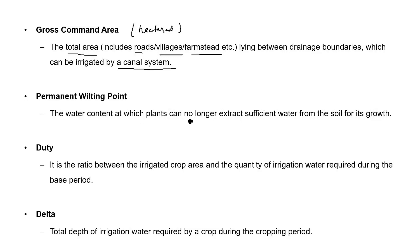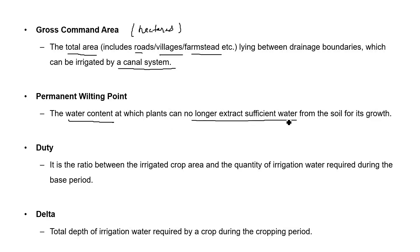The next parameter is permanent wilting point. Plants take water from the soil through roots for survival and photosynthesis. Sometimes there is very little water present in the soil such that the plant can no longer extract water for its growth. The water content at which plants can no longer extract sufficient water from the soil is known as the permanent wilting point. It is defined in terms of water content, expressed as a percentage or fraction.